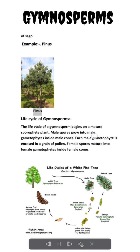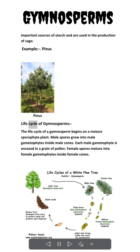Example: pinus. Life cycle of gymnosperms. The life cycle of a gymnosperm begins on a mature sporophyte plant. Male spores grow into male gametophytes inside male cones. Each male gametophyte is encased in a grain of pollen.